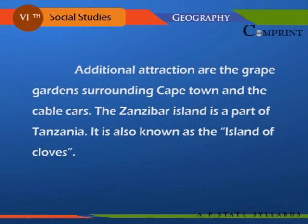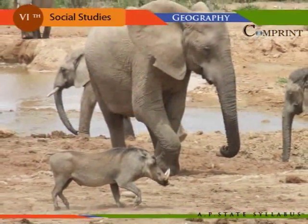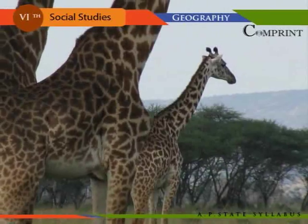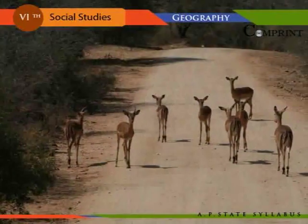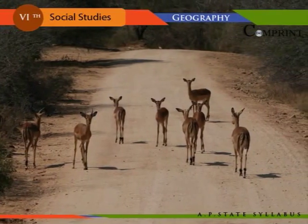Additional attractions include the grape gardens surrounding Cape Town and the cable cars. The Zanzibar Islands are part of Tanzania and are also known as the island of cloves. The unique attraction of Africa is the national safari, spread over South Africa, Botswana, Namibia, Malawi, Zambia, and Zimbabwe.